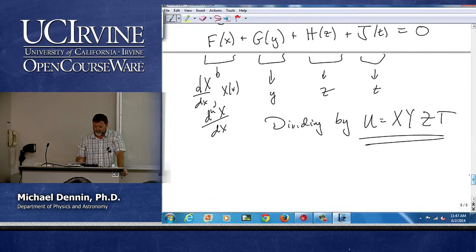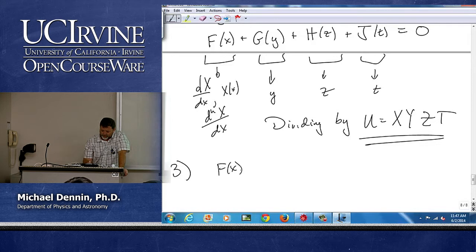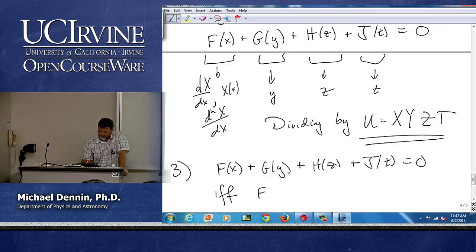Now comes, I think, the one that often causes students the most trouble. So this expression can equal zero if and only if f of x equals a constant,